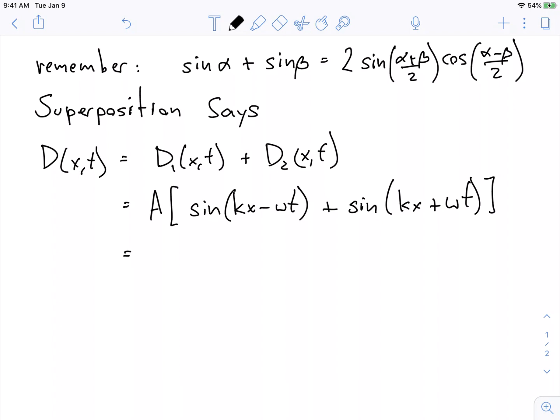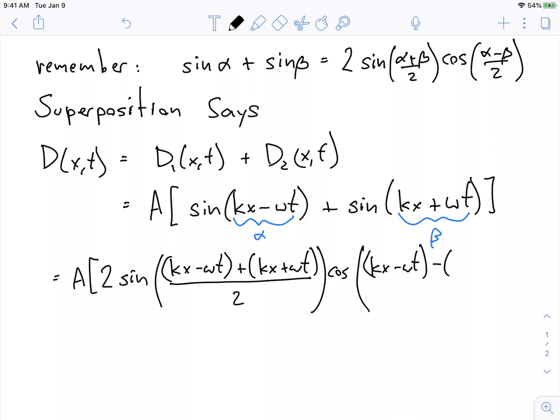And what is this equal to? Well, if I just look at the top here, this here is my α and this here is my β. So this is equal to A times 2 sin((kx - ωt + kx + ωt)/2) times cosine. I'm going to give myself even more room here because this is how physics works—everything gets big and ugly and then it gets simple again.